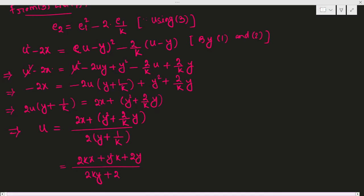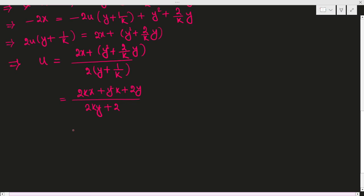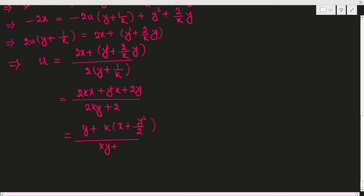Taking 2 common from the numerator and denominator, u simplifies to (kx + y²/2 + y) / (ky + 1). Our goal is to find the values of k for which the above problem has a solution defined on ℝ × (0, ∞), that is x ∈ ℝ and y ∈ (0, ∞).